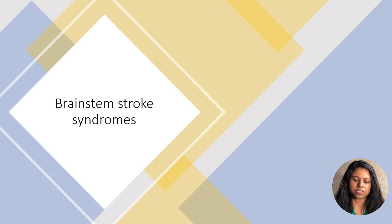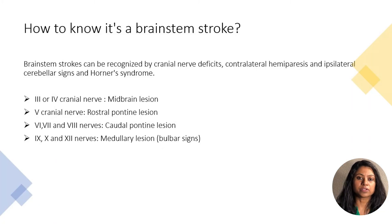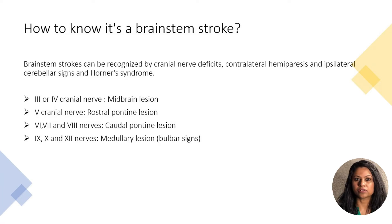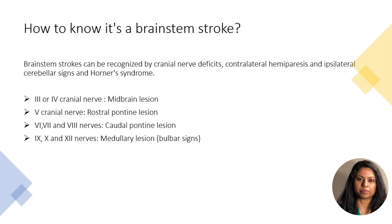Brainstem strokes present as stroke syndromes because of cranial nerve involvement. Look for signs of cranial nerve deficits, ipsilateral Horner's syndrome, and cerebellar signs, and at the same time, contralateral hemiparesis.